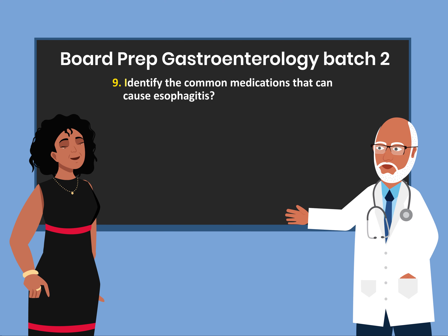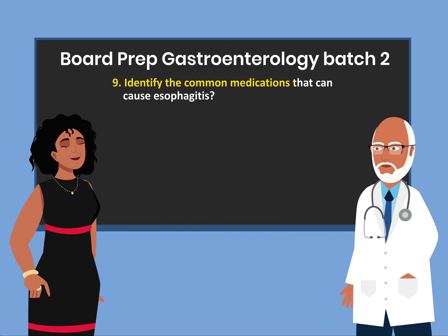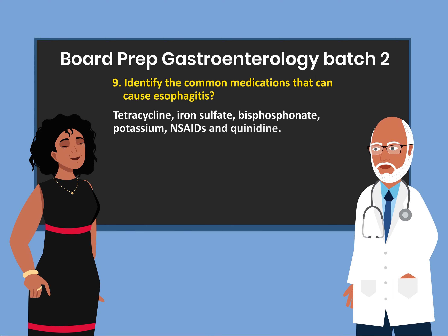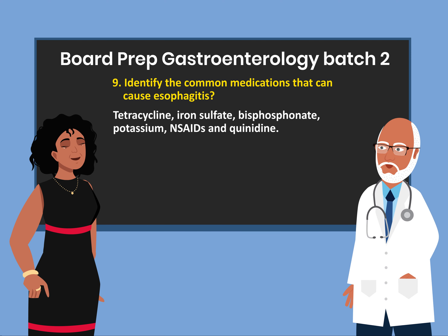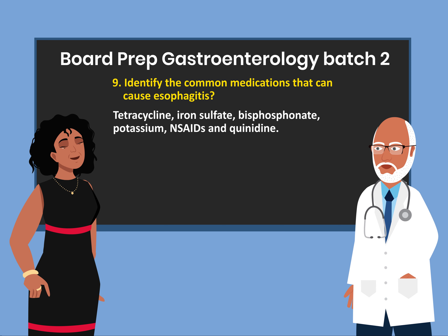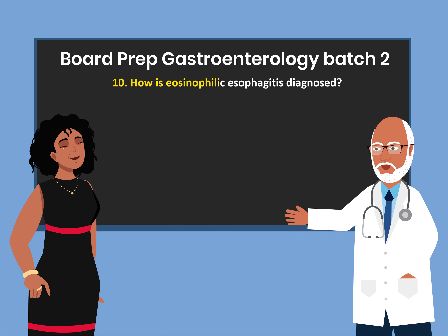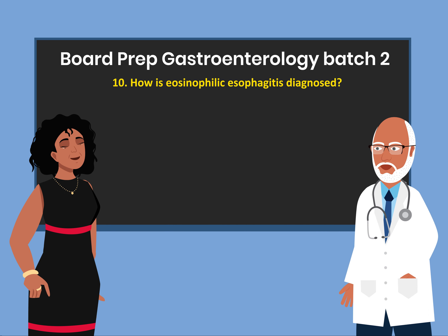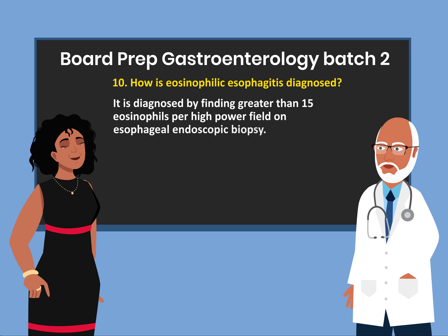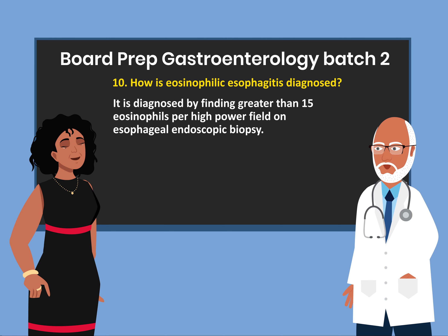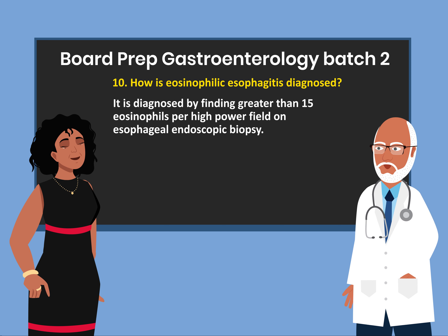Question 9: Identify the common medications that can cause esophagitis. Tetracycline, iron sulfate, bisphosphonate, potassium, NSAIDs, and quinidine. Question 10: How is eosinophilic esophagitis diagnosed? It is diagnosed by finding greater than 15 eosinophils per high-power field on esophageal endoscopic biopsy.